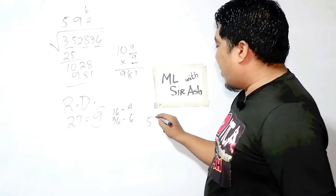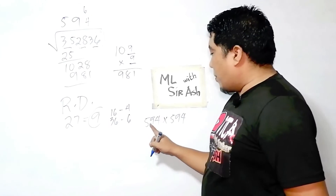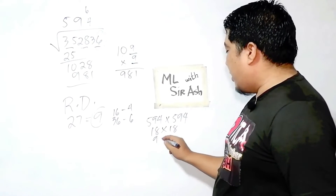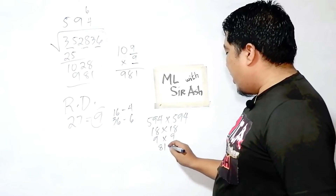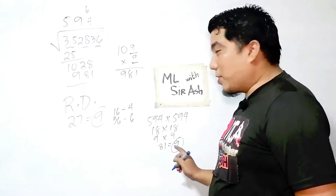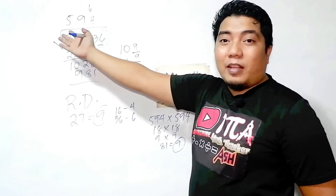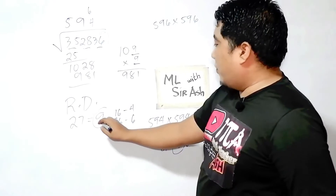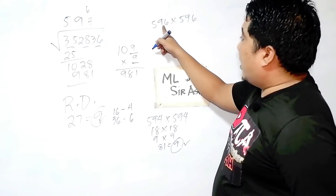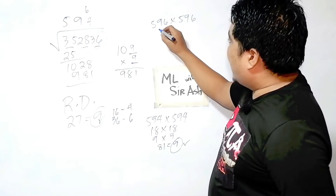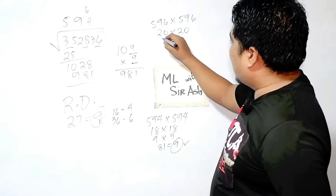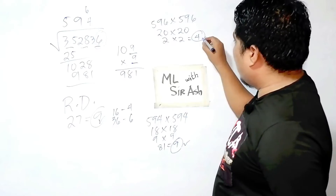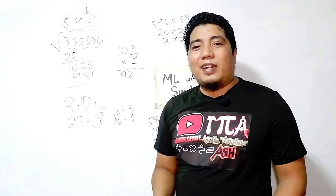Let's start with 594. We have 5 plus 9 is 14, plus 4 is 18. So 18 times 18: 1 plus 8 is 9, and 9 times 9 is 81, and 8 plus 1 is 9. The root digit is 9 — it matches! So the answer could be 594. For checking purposes, let's consider 596: 5 plus 9 is 14, plus 6 is 20. Then 20 times 20: this becomes 2, and 2 times 2 is 4. So the root digit is 4, which is wrong. Therefore our final answer is 594.